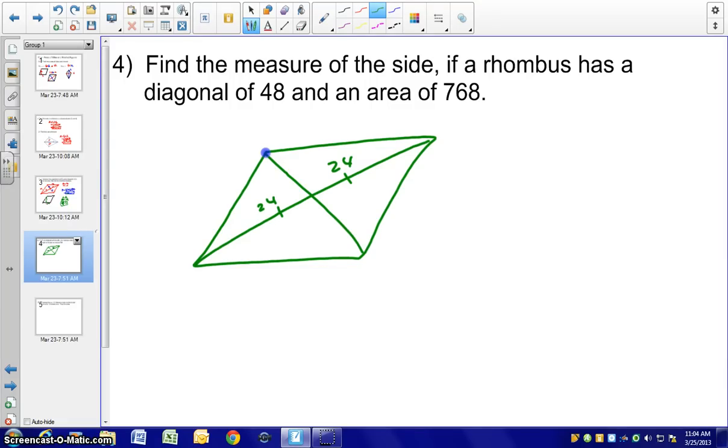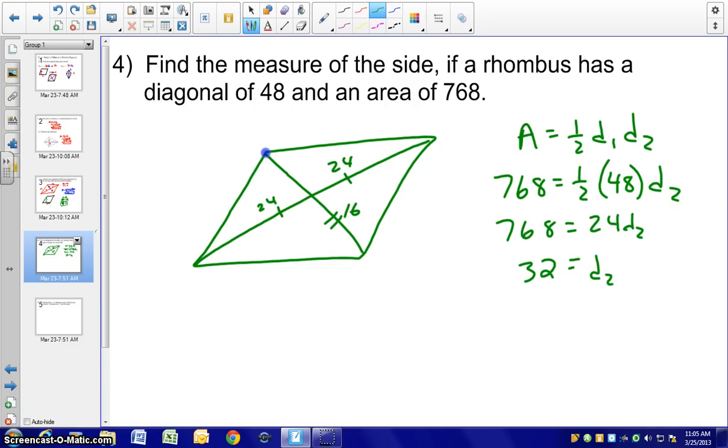Well, we have area equals base times height. We don't know the height or the base. Or we could use area equals one half D1 D2. We know the area is 768, and we know one of the diagonals is 48. Let's see if we can find the other one. So we have 768 equals 24 D2. So the second diagonal would be equivalent to 32. And from there, we could split that into 16 and 16. We know we have a right triangle there to find the side X.